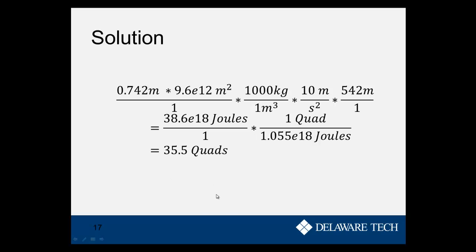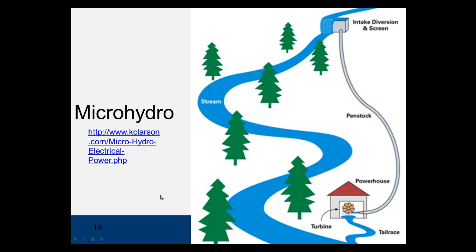It's worth noting that hydropower doesn't have to mean a big dam. There's also what's called micro hydro, where you divert a stream with an intake diversion, with a screen to keep particles out, and put a pipe called a penstock down to a powerhouse with a turbine. The water turns the turbine and then returns to the stream. This is used in rural areas for small amounts of power instead of the large central dams we're used to.